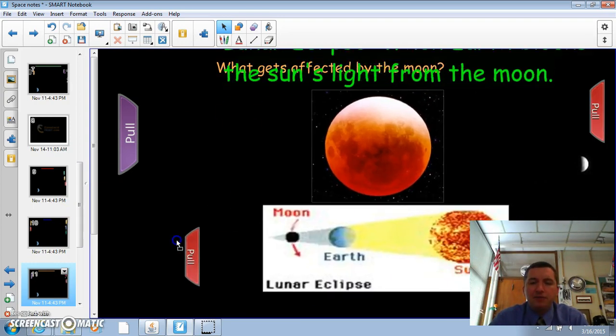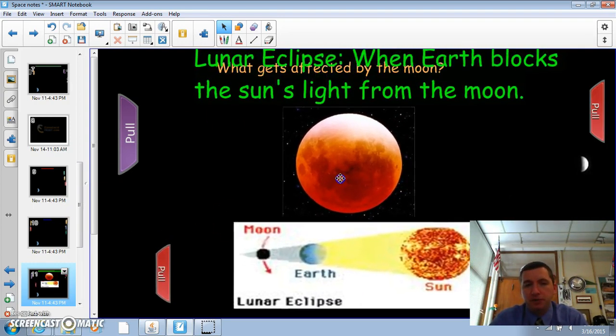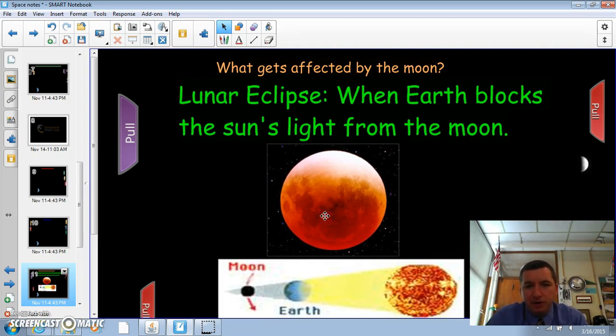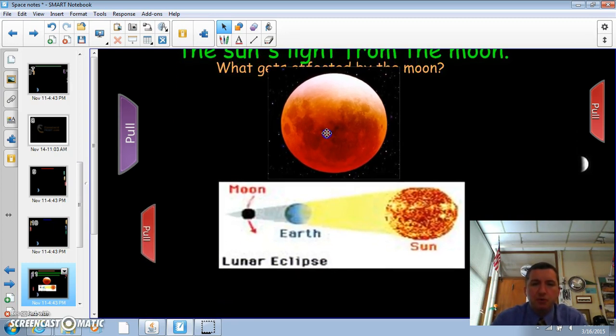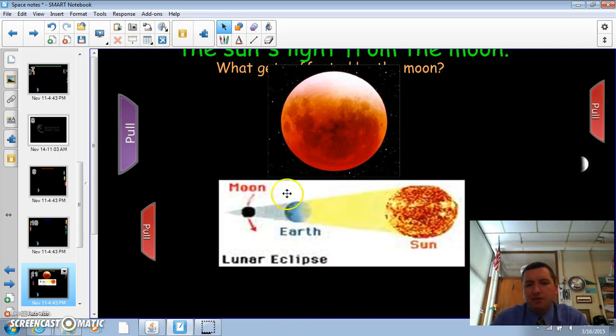And last but not least, the much more fun one to look at because you can look at it, is a lunar eclipse. And this is when the earth blocks the sun's light from the moon. Now, again, the sun's pretty big. And the earth is not going to be able to fully eclipse the moon. So a little bit of light bouncing around out there in the universe gets around and lights up the moon and gets this nice, really cool color to it.